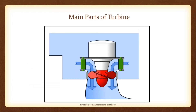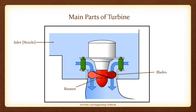Main parts of a turbine: First is the inlet or nozzle — it guides the fluid to flow in the designed direction and velocity. Second is the runner, which is the rotating part of the turbine, and blades are attached to the runner. The blades are the part on which fast-moving fluid strikes and rotates the runner. The casing is the outer airtight covering of the turbine which contains the runner and blades, protecting the internal parts.